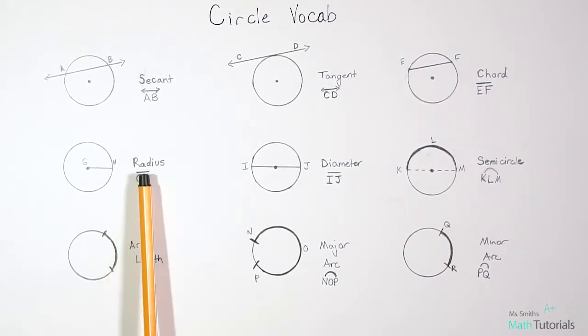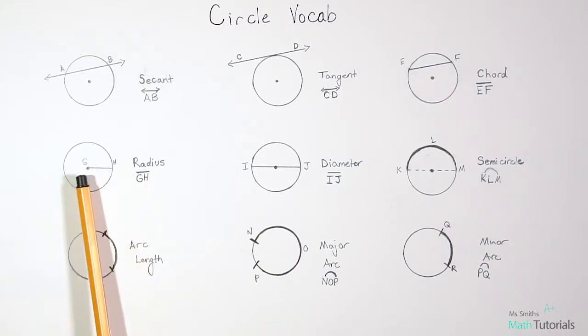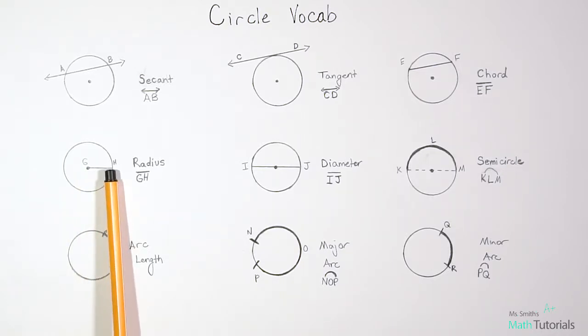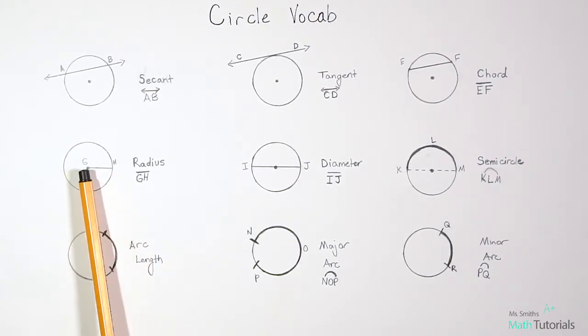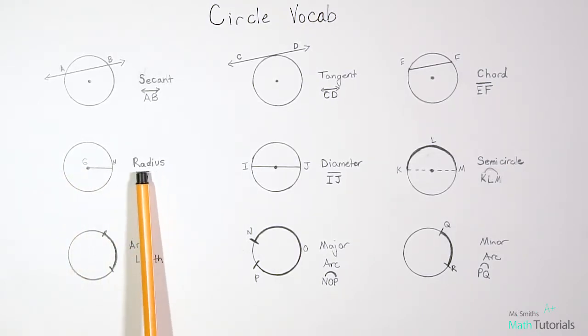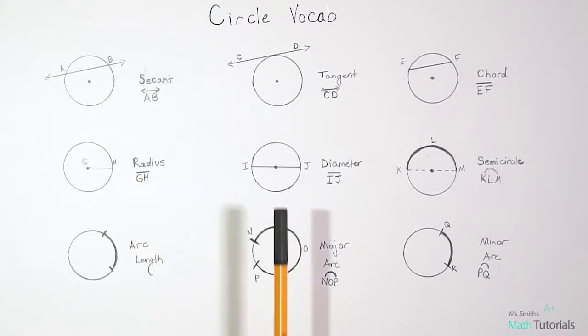The next one is radius. So a radius starts at the center of a circle, and it just extends to the edge of the circle. So it covers the halfway distance across a circle. It is also a line segment. So in this case, the way we wrote GH is GH with a little segment above it.